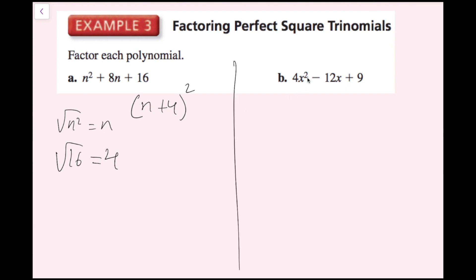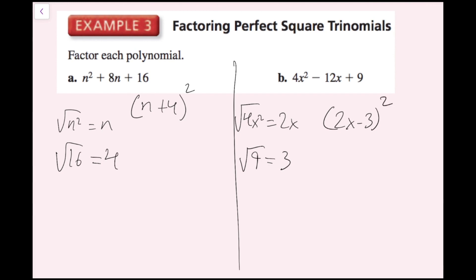For part b, I have 4x squared minus 12x plus 9. I'll do the same thing. My first term 4x squared is a perfect square, and my last term 9 is a perfect square. The square root of 4x squared is 2x, and the square root of 9 is 3. Does 2x times 3 times 2 equal 12x? Yes — 2x times 3 is 6x, times 2 is 12x. Since the middle term is negative, I subtract instead of add, giving me 2x minus 3 quantity squared. Now we're done with part b.